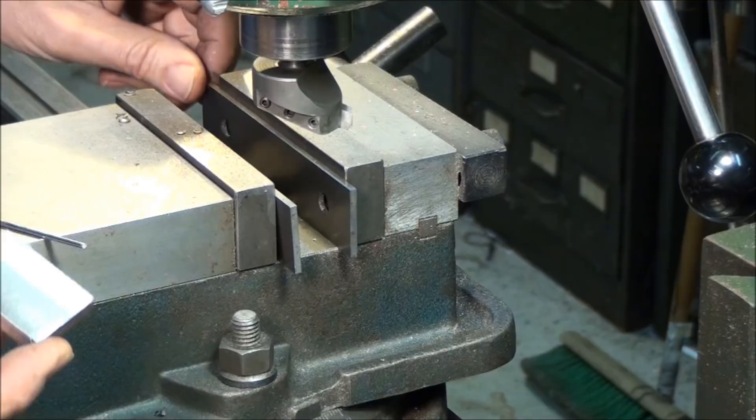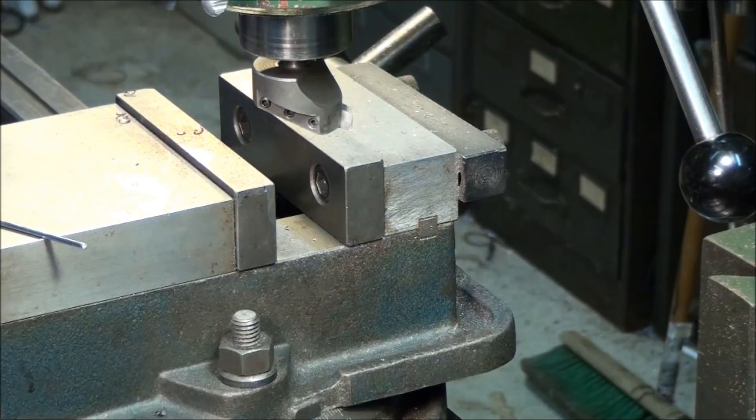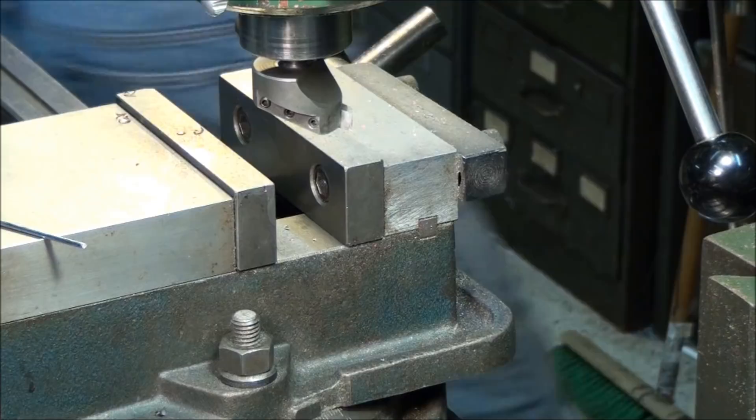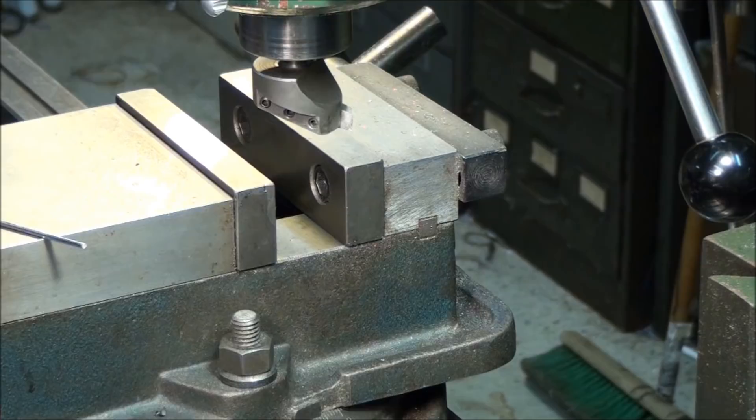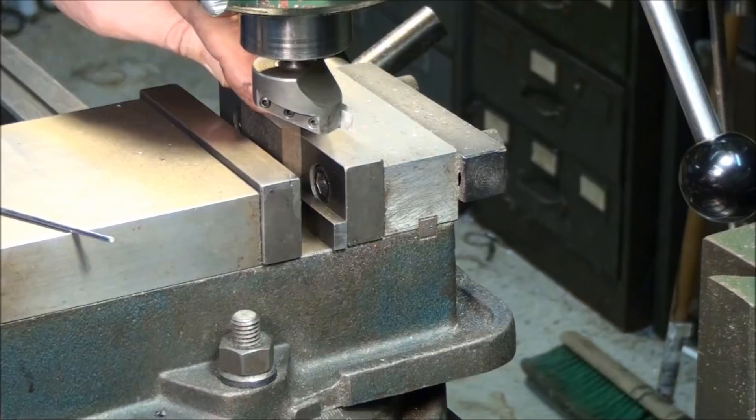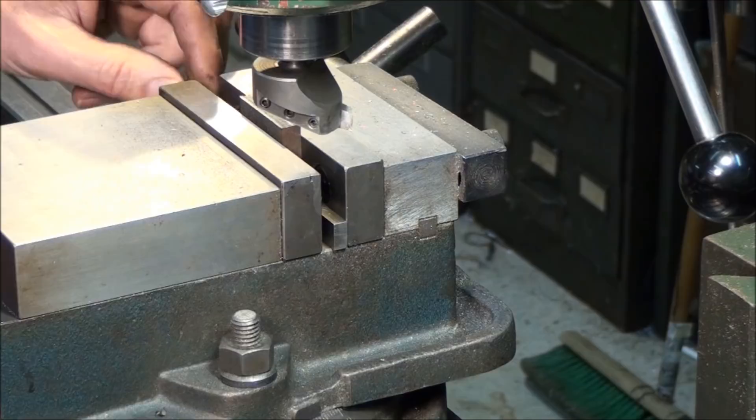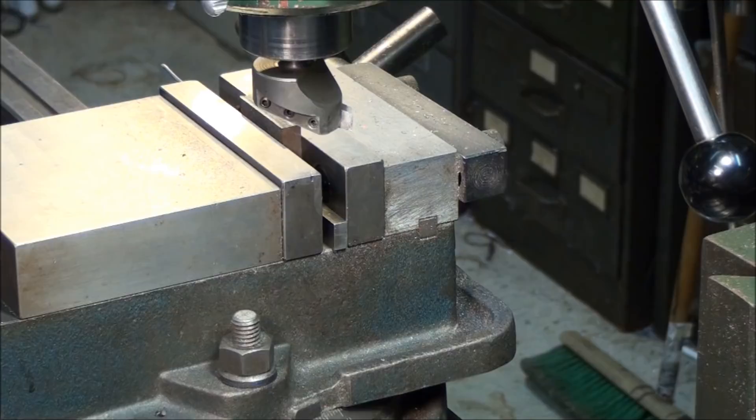Alright so there's the first side. It's nice cross-hatch pattern on it means my head's trammed in well, it's nice and perpendicular to the table. So now I'm going to work off this surface I just machined and do the four edges. Again I'm going to continue to use the piece of aluminum wire and we don't need to hammer anything down this time because everything that it's touching is machined so we don't really care about that.